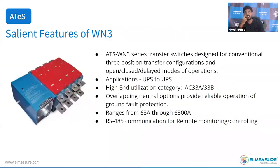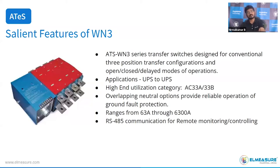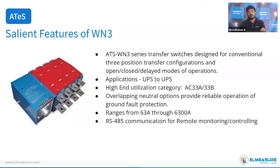The WN3 model has two categories: open transition and close transition. Close transition is for UPS-to-UPS application, while open transition is for transformer-to-transformer, transformer-to-generator, and generator-to-generator applications. Utilization category is AC33B. Overlapping neutral is available as an optional feature — particularly for data centers where neutral return current is high. Range is from 16A to 6300A with RS-485 communication for remote control and monitoring.